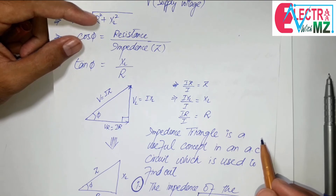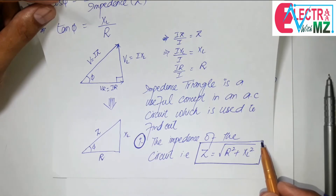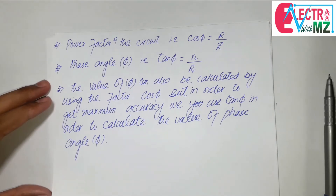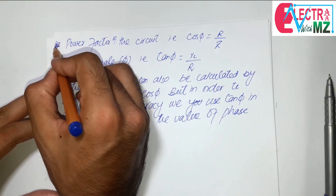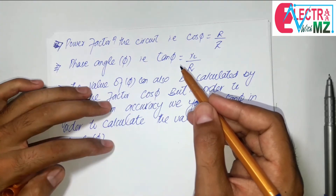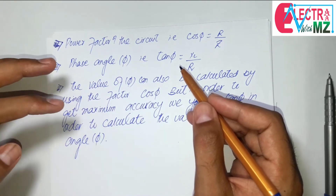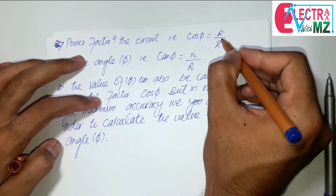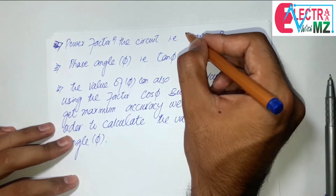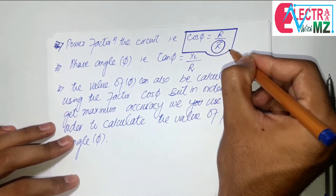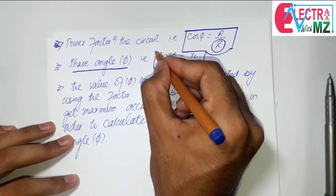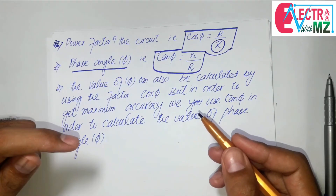Number two, how to find out the power factor in the case of an RL series AC circuit — we draw the impedance triangle to find out that particular value, and with its help we can find out the power factor easily. After that, to find out the phase angle phi, we also take help from the impedance triangle.